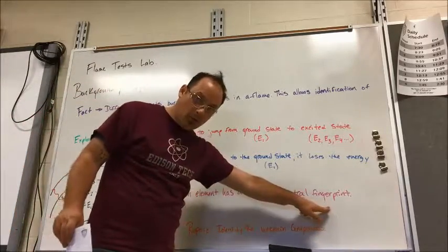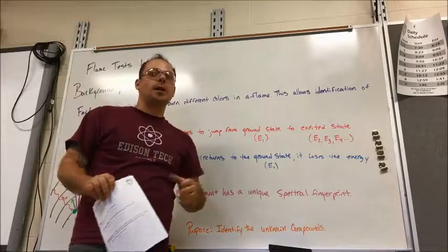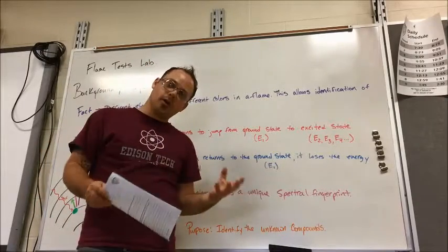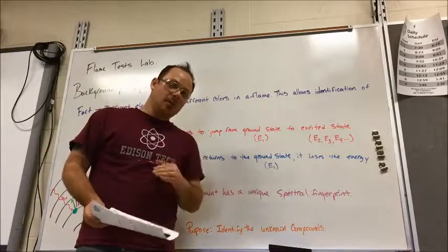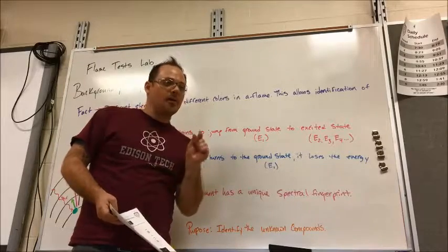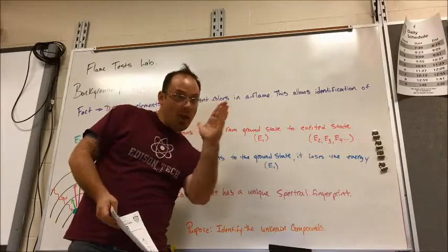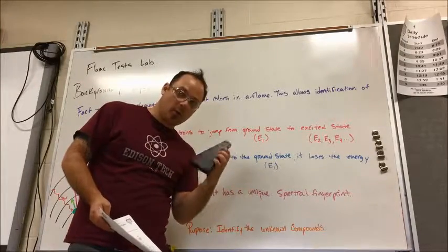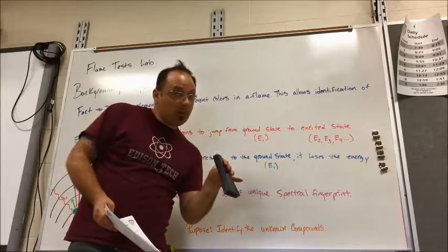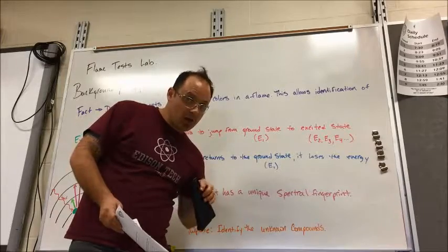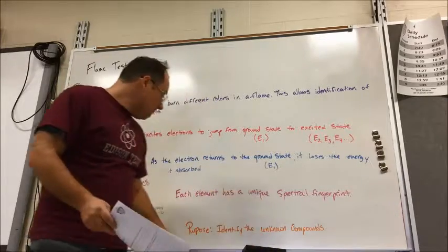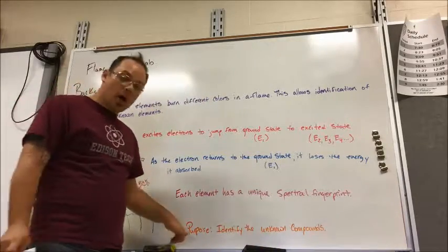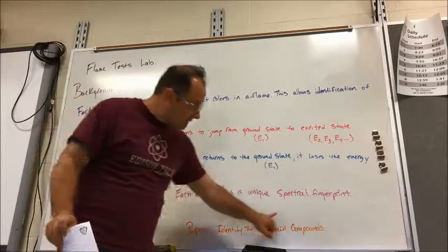As a result, each element has a unique spectral fingerprint. In the flame test lab we looked at just in general what color an element burned. In this particular activity we're going to look at elements and see what wavelengths of light are coming out of them using this thing called a spectroscope. It's not a telescope but you do look through it.